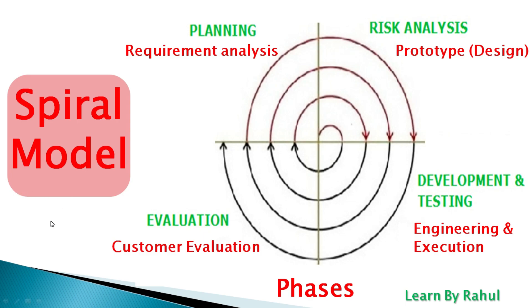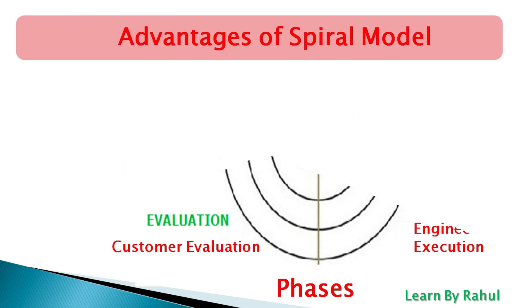After customer evaluation, we move back to the first phase — planning — and repeat all phases: gathering requirements, risk analysis, development and testing, and customer evaluation. We repeat all phases until the customer is satisfied. This is why the Spiral model is also called an iterative and incremental model.